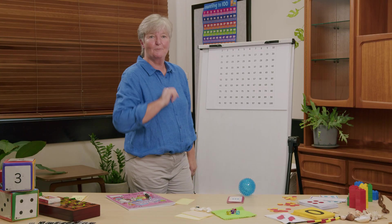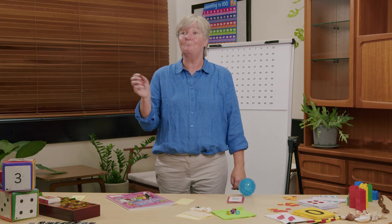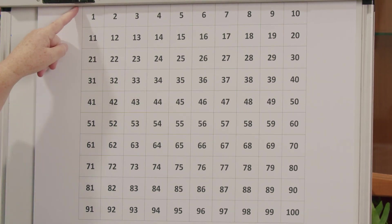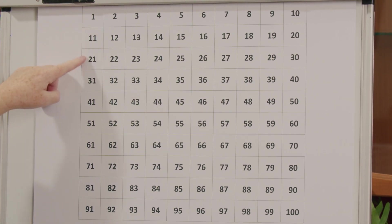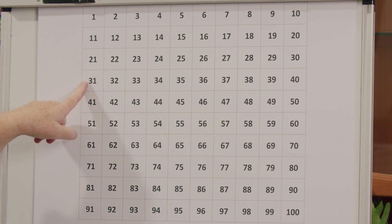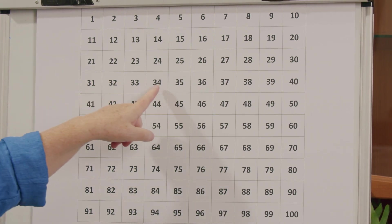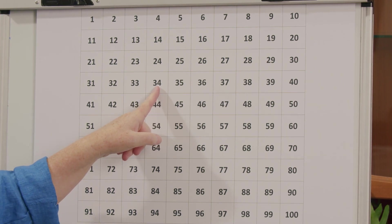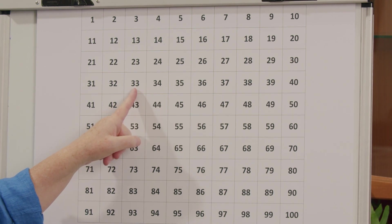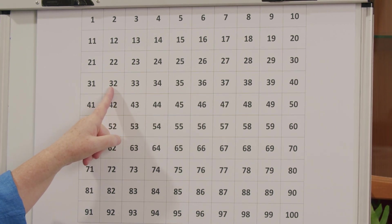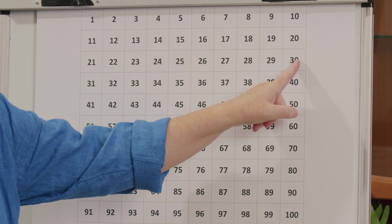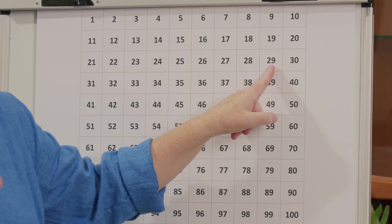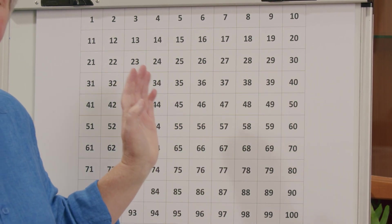That's very good. This time we're going to do something very tricky — we're going to count backwards from 34. Can you find 34? It's not in the ones or the teens or the twenties, but it is in the thirties. Now remember we're counting backwards from 34. 34, 33, 32, 31, 30, 29. Well done — did you get 29? Five less than 34 is 29.